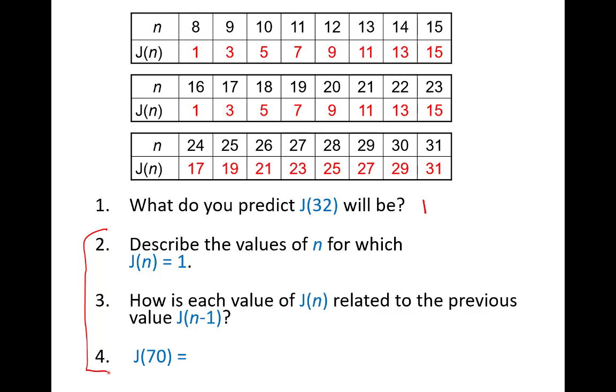So how about problem number two? Describe the values of n for which J of n equals one. Well, we saw when n is eight, it has a value of one. When n is sixteen, it has a value of one. When n is thirty-two, the ending position is one. These look like powers of two. So how do I express powers of two? I might say n equals two to the k for k equals one, two, three, and so on.